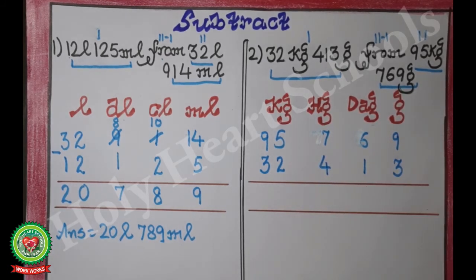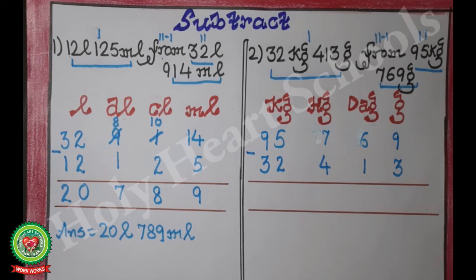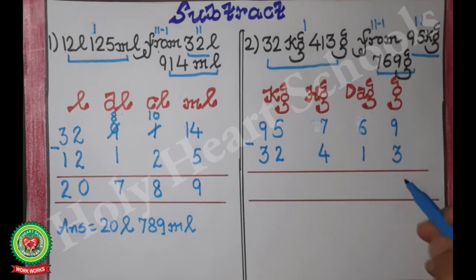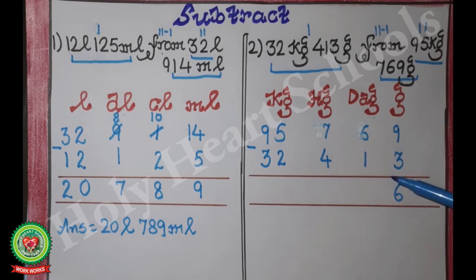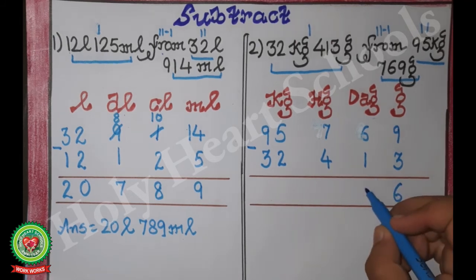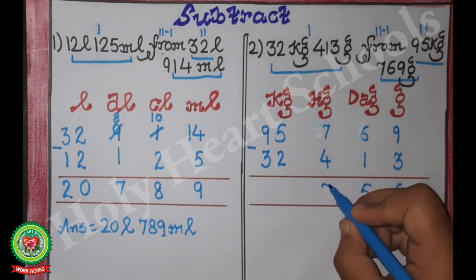We write the minus sign and do subtraction. 9 minus 3 is 6, so we write 6. 6 minus 1 is 5, so we write 5. 7 minus 4 is 3, so we write 3.